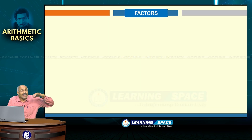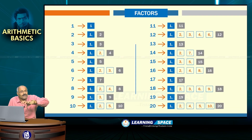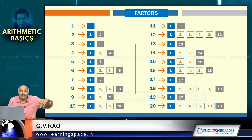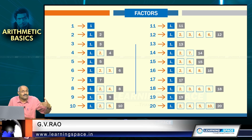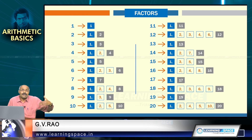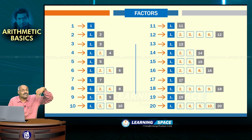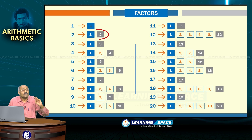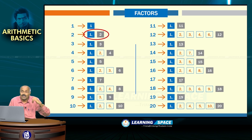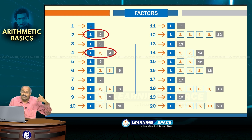I have taken once again factors for numbers 1 to 20. You may feel bored, but I would like you to concentrate on factors because this is the basic knowledge which is very much essential to understand mathematics. The number which has got only 2 factors is the prime number. The number which has got more than 2 factors is a composite number.